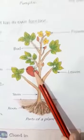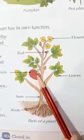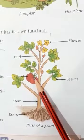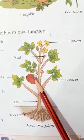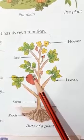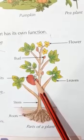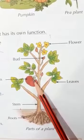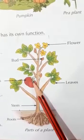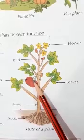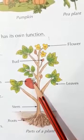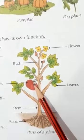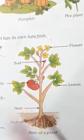Fruit grow on plants that have flowers. Some fruit can be eaten and some should not be eaten. Thank you.